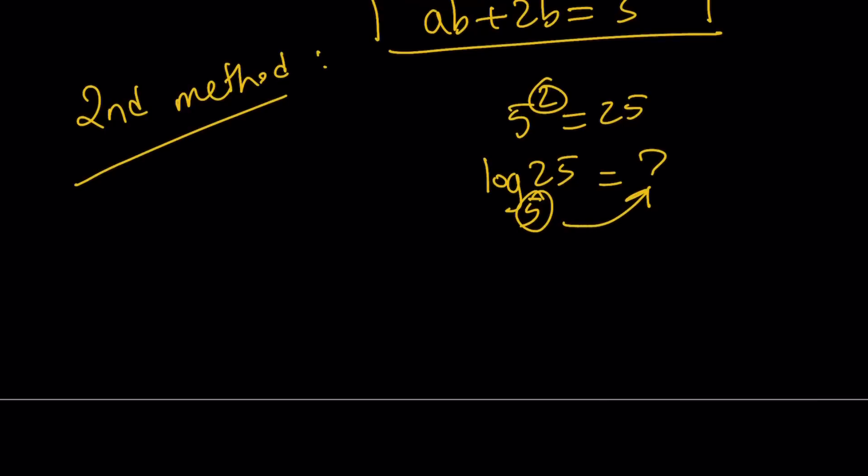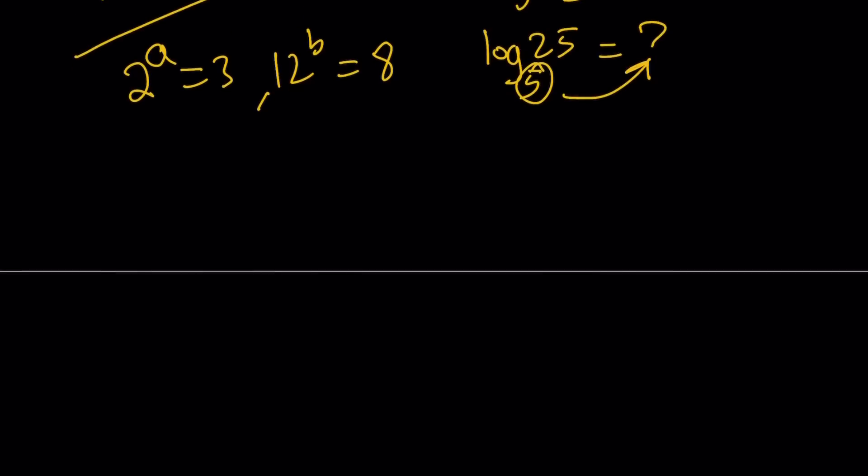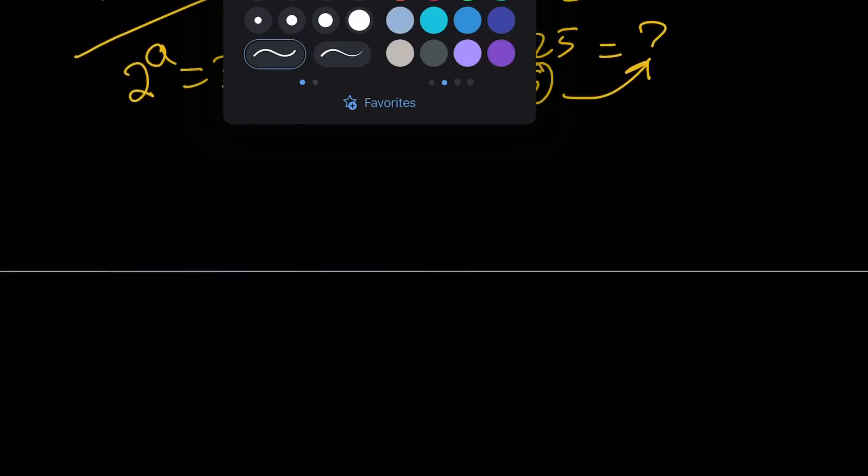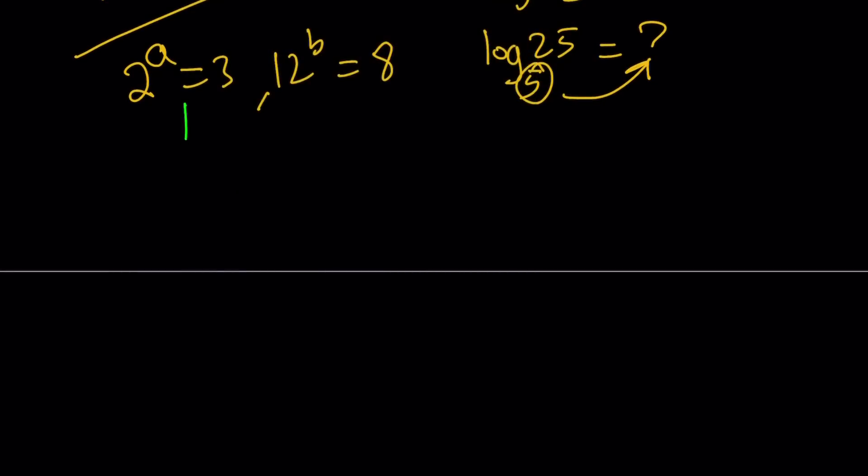Okay, for our second method, we're going to use logs but how? Now, let's rewrite the original problem, 2 to the power of a equals 3 and 12 to the power of b is equal to 8. Now let's go ahead and log both sides of each equation. Let's start with the first one. Log 2 to the power of a equals log 3. Of course, both with base 2. And the reason why I use base 2 is fairly simple because 2 is the base. Make sense?